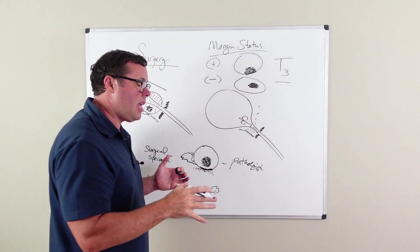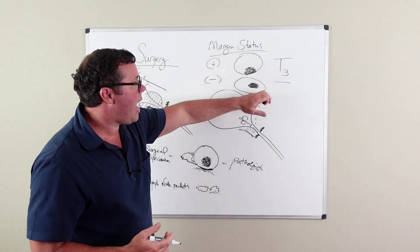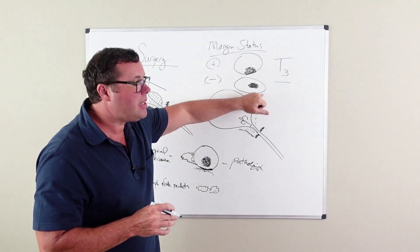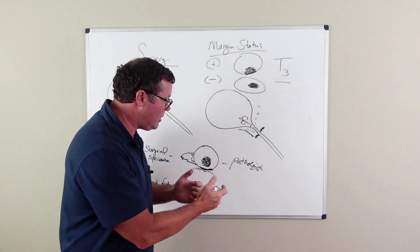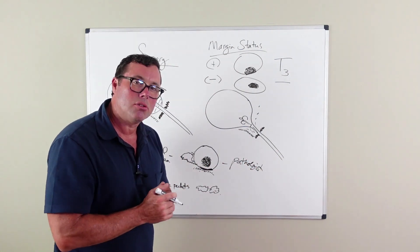these are the patients that you like to see that have chosen surgery and have potential cure rate for their surgery, based on their margin status, which is done by the pathologist looking at your surgical specimen.